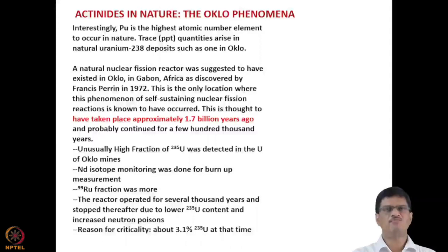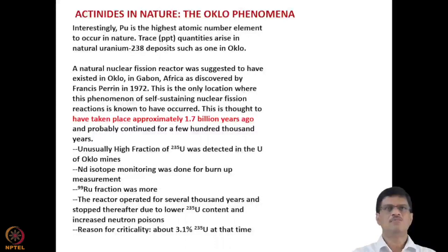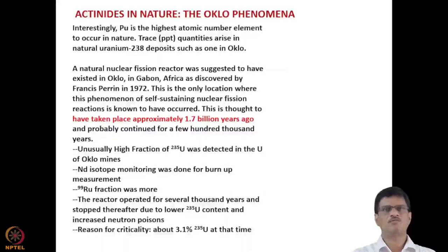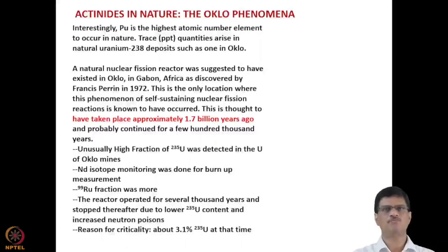Uranium and thorium are available in nature in large quantities, and actinium and protactinium also occur naturally. Other actinides like plutonium were not found in nature and were synthesized around 1940 by Seaborg and his research group. However, trace quantities of plutonium were detected in natural uranium-238 deposits such as those in Oklo. This is called a natural fission reactor, suggested to have existed in Oklo, Gabon, Africa. It was discovered by Francis Perrin in 1972 and is the only known location where self-sustaining nuclear fission occurred — approximately 1.7 billion years ago, probably continuing for a few thousand years.